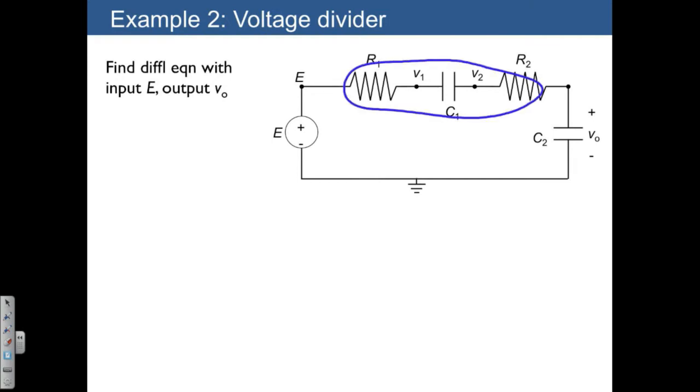which is going to be R1 plus 1 over C1S plus R2, and then for the second one we have Z2 is equal to 1 over C2S.